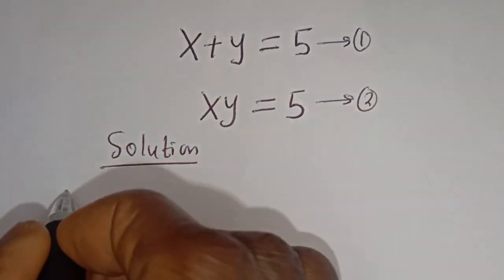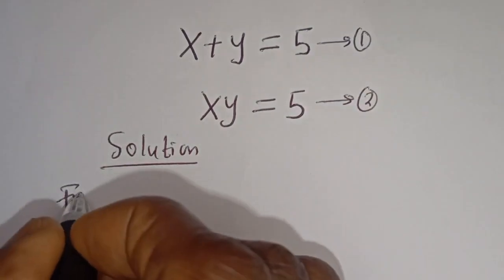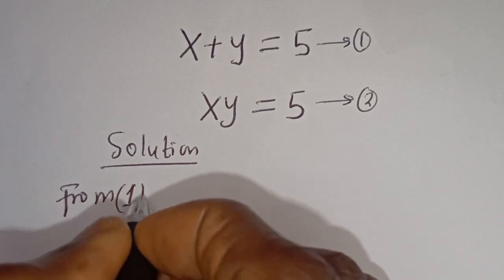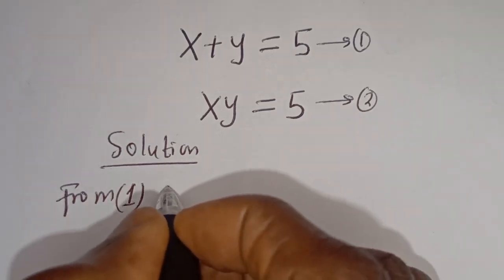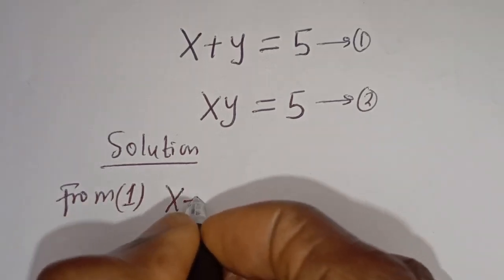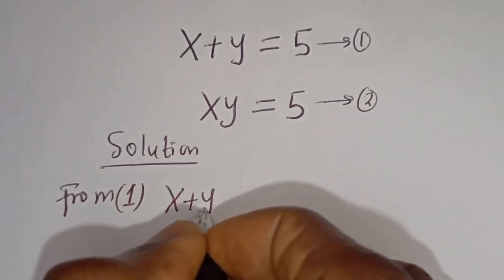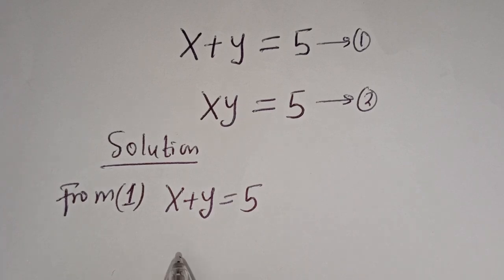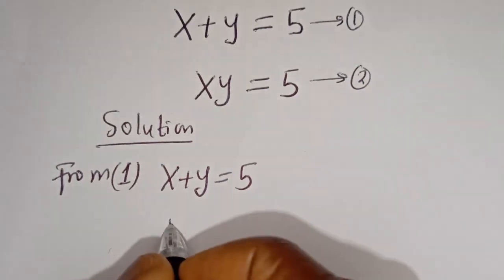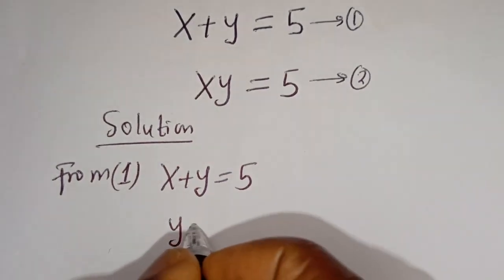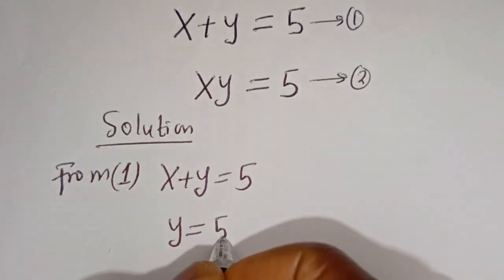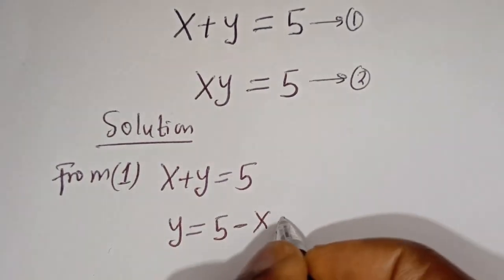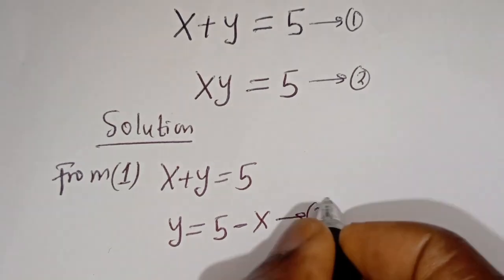From equation 1, x plus y is equal to 5, then y is equal to 5 minus x. Let's call this equation 3.